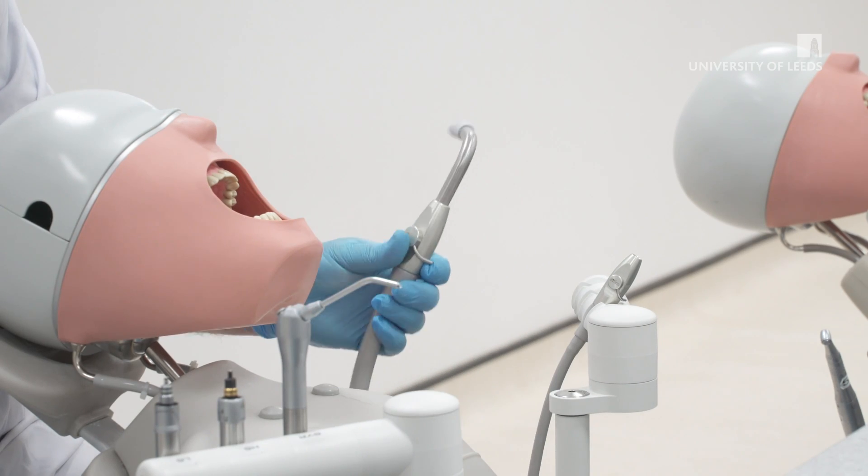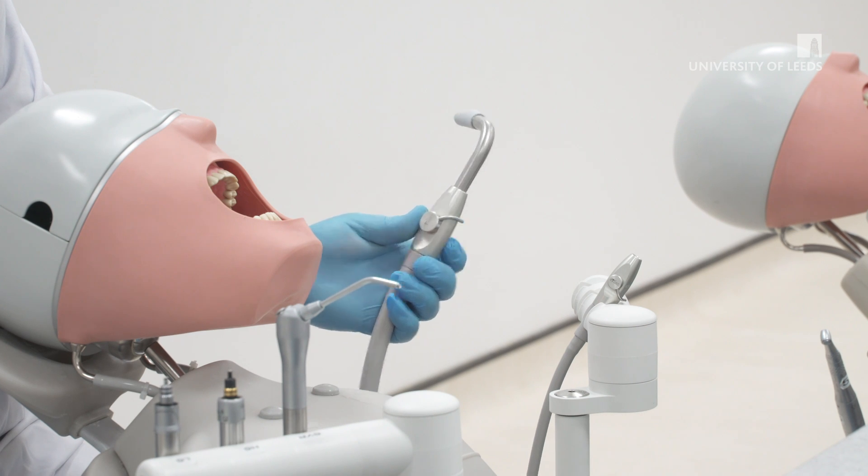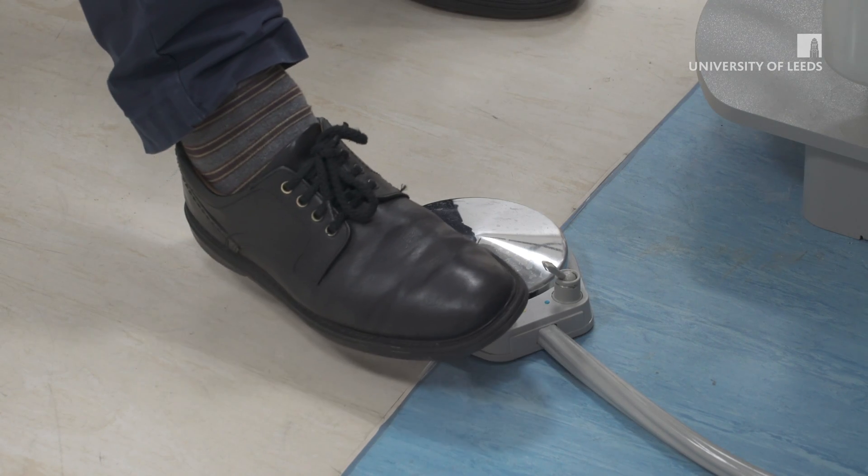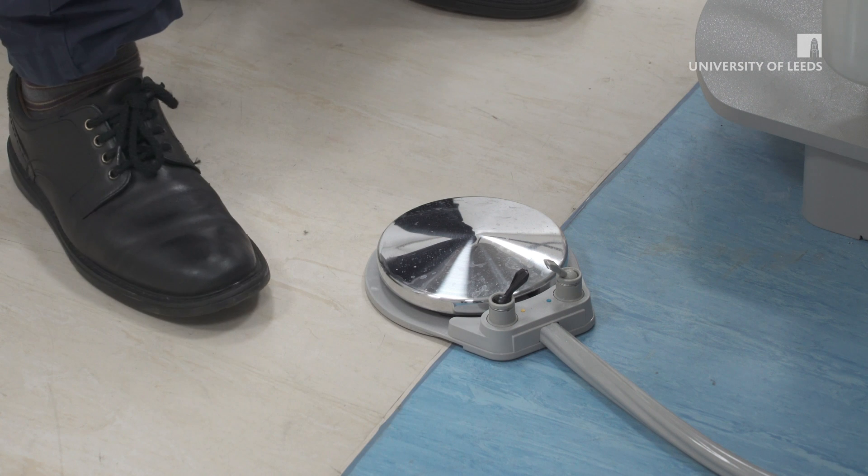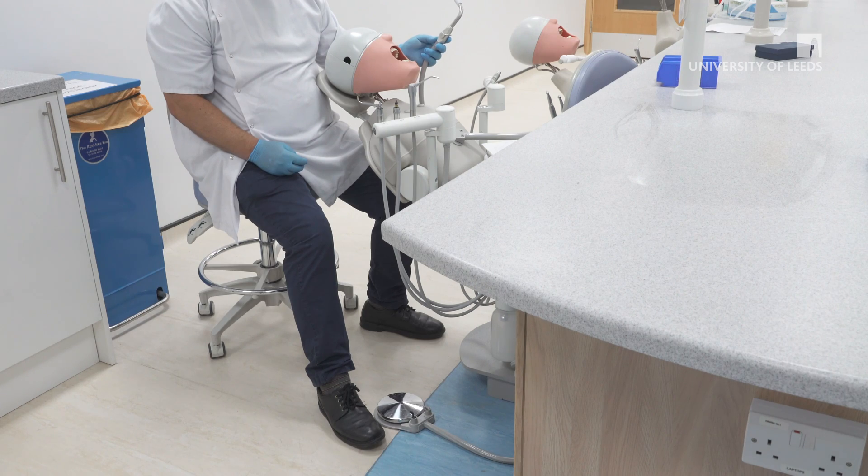To operate the suction, you push the lever on the suction pipe upwards. On Type 1, you also have to push the black toggle switch on the foot pedal to the yellow position. Please note that the suction must be switched on at all times when using water on the unit.